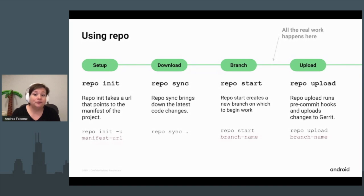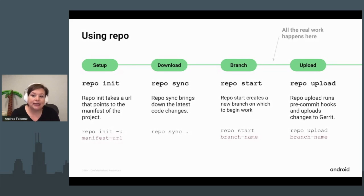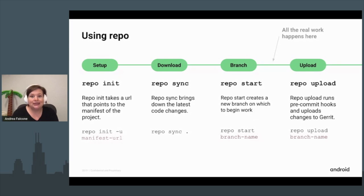To use repo, run `repo init` to get set up — this gets the latest version of repo with recent bug fixes. You must specify a URL for the manifest file, which dictates where the various repositories included in the Android source are placed within your working directory. To download the Android source tree, run `repo sync` — the initial sync can take an hour or more because it's a lot of data.